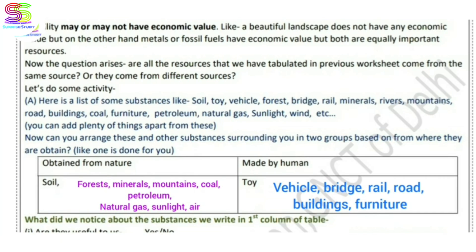Let's do some activities. Number one: here is a list of some substances. You have been given a list of items below — soil, toy, vehicle, forest, bridge, rail, minerals, rivers, mountains, road, building, coal, furniture, petroleum, natural gases, sunlight, wind, etc.